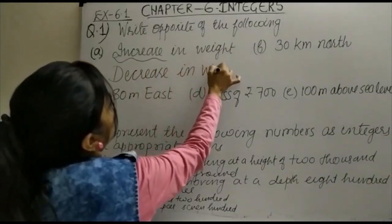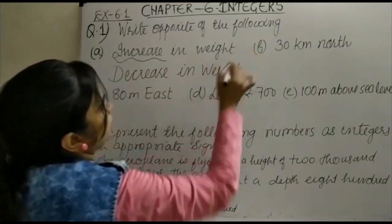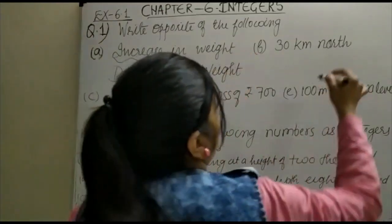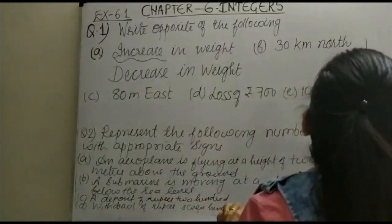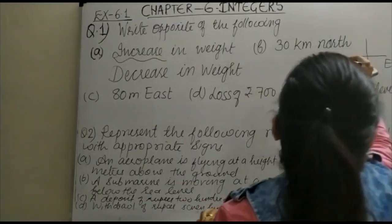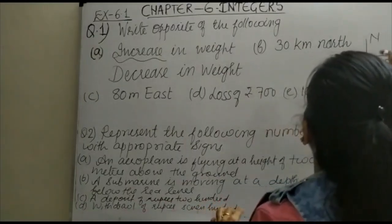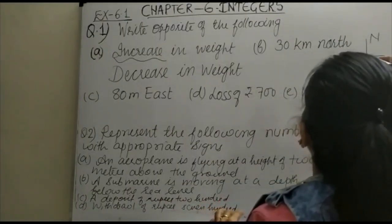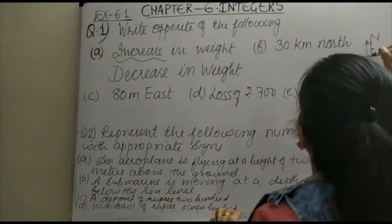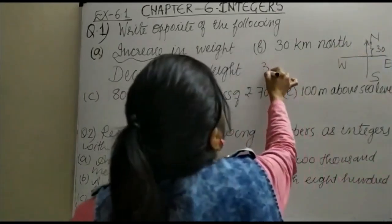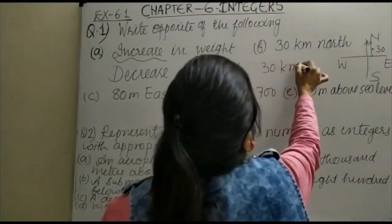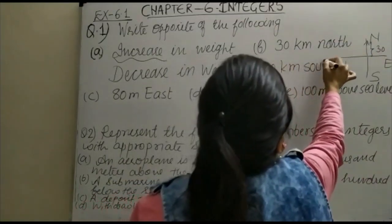Then the second one is 30 kilometer north. So you know this figure: this is your east, this is your west, and this is your north and this is your south. If it is 30 kilometer towards north, then its opposite will be 30 kilometer south. You can see the opposite of north is your south.